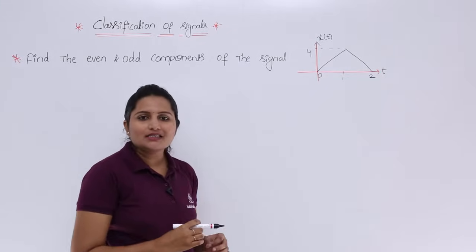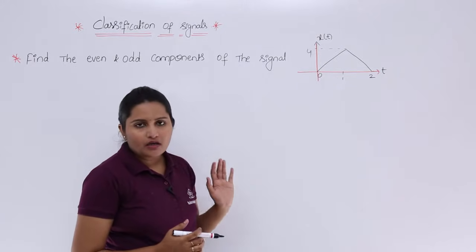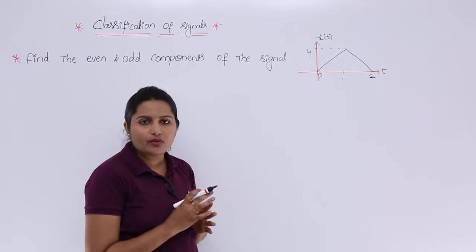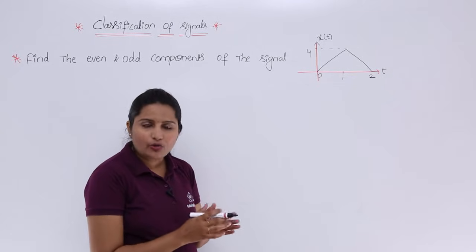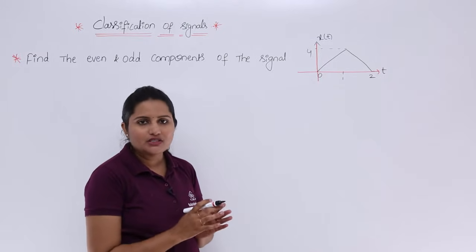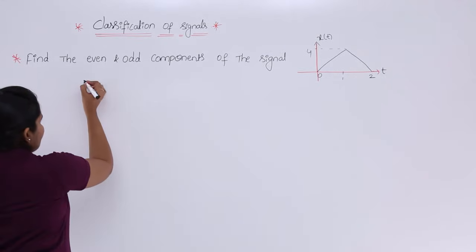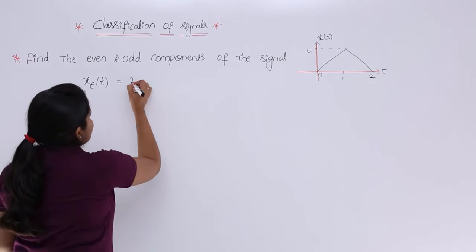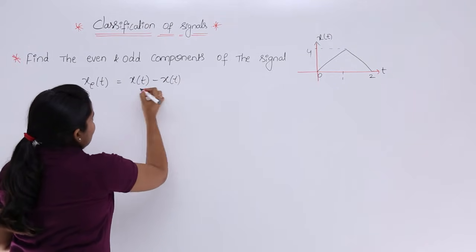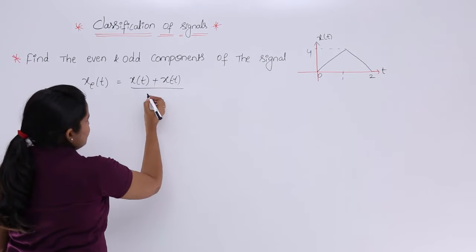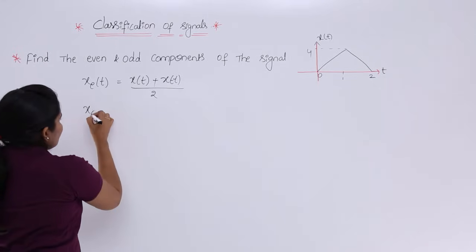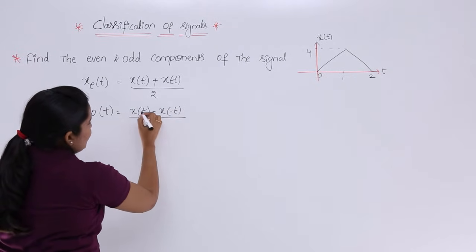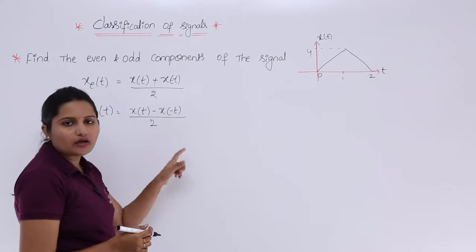This is the signal given. We need to trace the even component and odd component of this waveform. You need to consider this as x(t) and recall the equations for even and odd components, which we already derived in the last video. The even component xe(t) is obtained by the equation: x(t) plus x(-t), divided by 2. If you want the odd component, you subtract the reflection: x(t) minus x(-t), divided by 2.